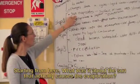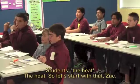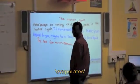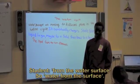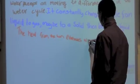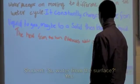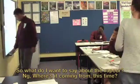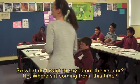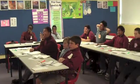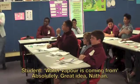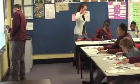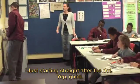Starting from here — what was it about the sun that actually causes the evaporation? The heat. So let's start with that. Evaporates — what was it we were evaporating? Probably the water surface. So water from the surface. So what do I want to say about the vapor? Where's it coming from this time? It's coming from trees and other plants. Water vapor is coming from — absolutely, great idea. Remember in your books this is still a paragraph, just starting straight after the dot.